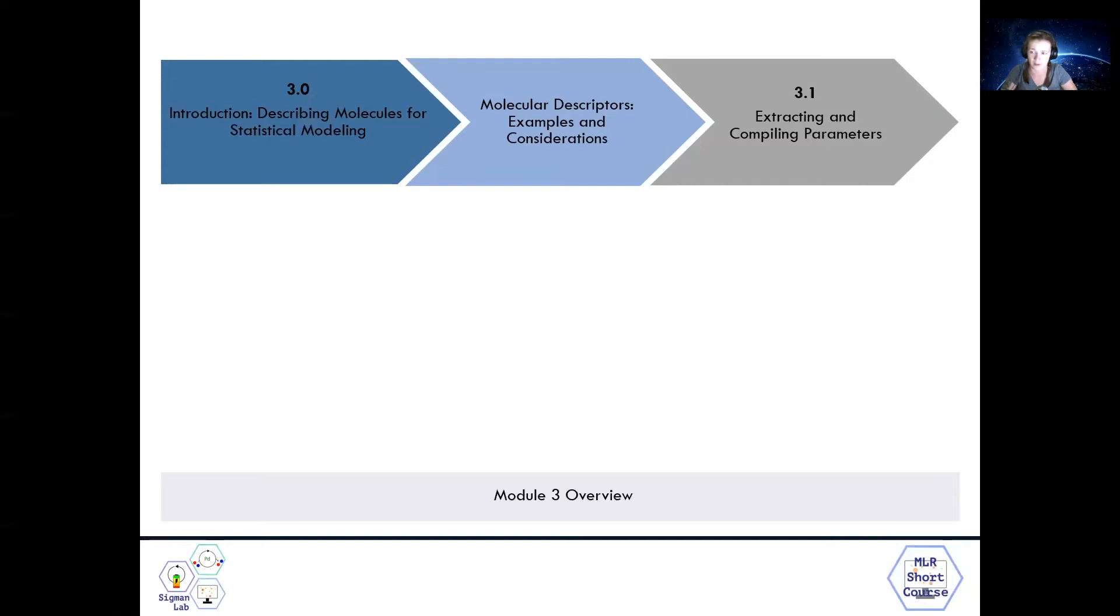Finally, in a separate video, Module 3.1 will walk through the steps of using the sigma group's tools to extract and compile parameters for use in statistical modeling. First, we'll go over the need for describing molecular structural differences and how molecular descriptors fit into our aims of statistical modeling.